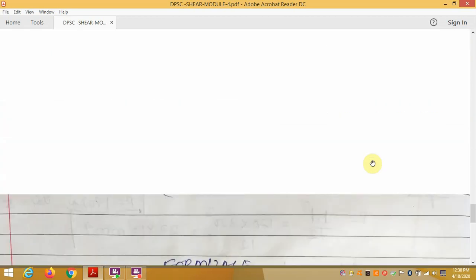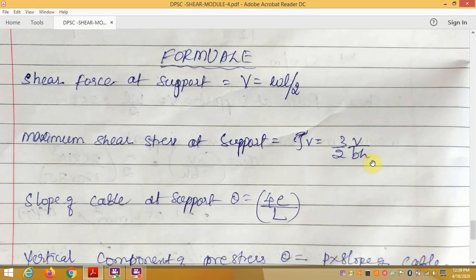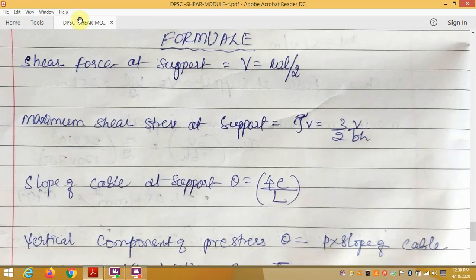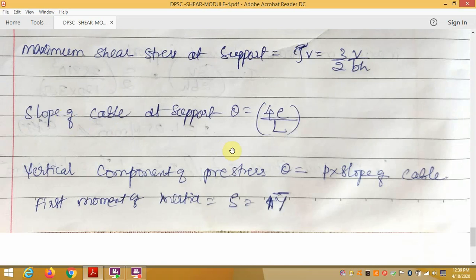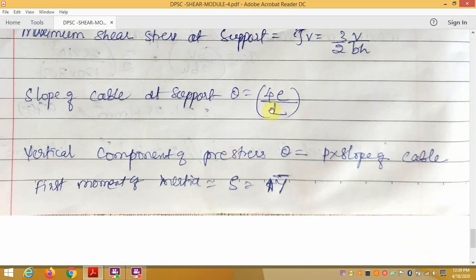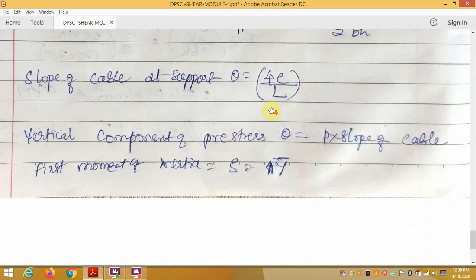Next are the formulas. Shear force at the support, in the problems if you want to find the shear force at the support, that will be given by V equals W times L upon 2. Then maximum shear stress at support Tau V equals 3 by 2 V divided by B times H. Slope of the cable at support theta equals 4E upon L.